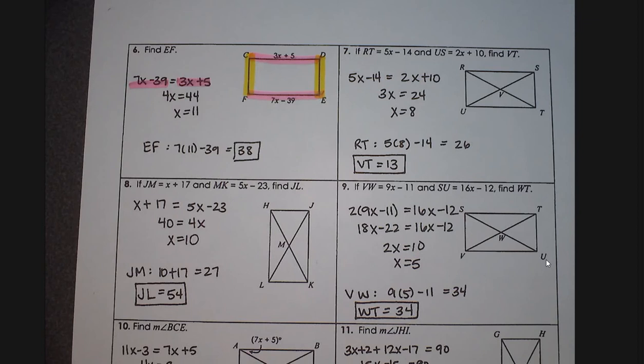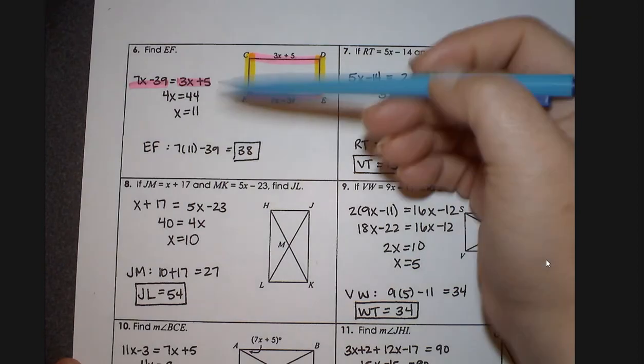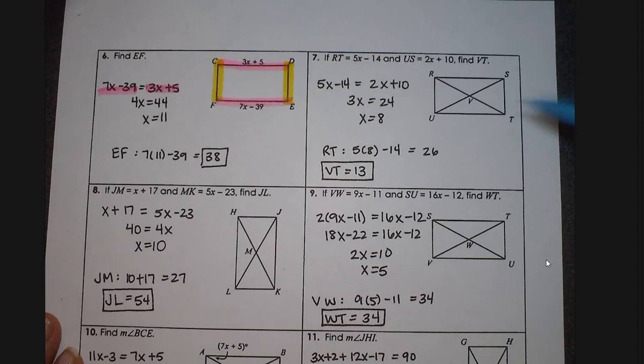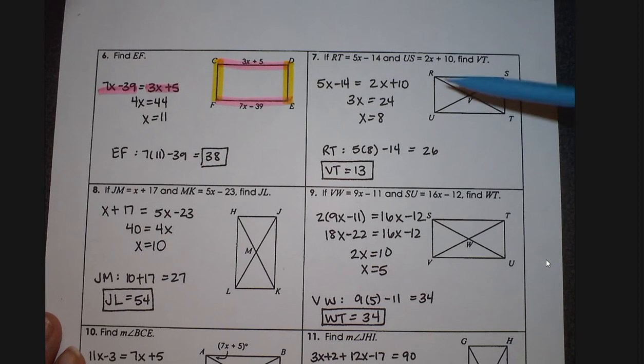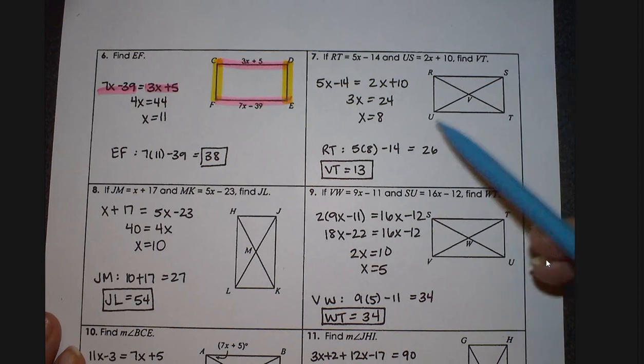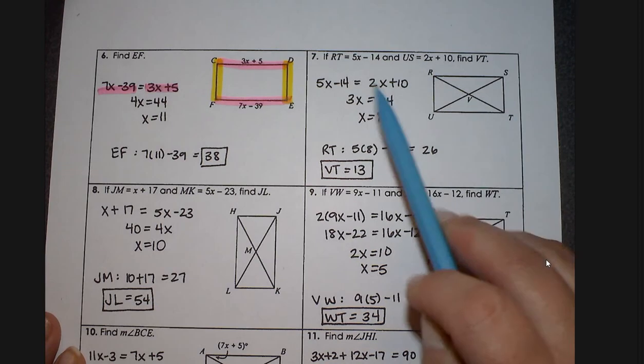And that's where that's coming from. And again, now you're just going to go through the algebra. So taking a look here, RT is this diagonal. Well, what's true about the diagonals in a rectangle? They're both congruent. That's where you're getting the equal sign from.